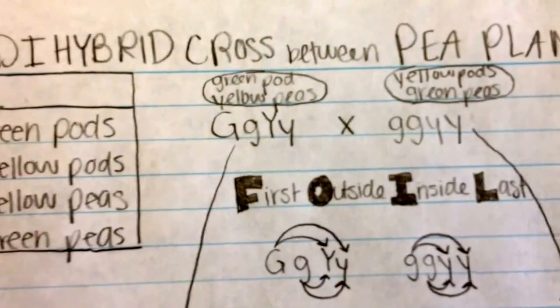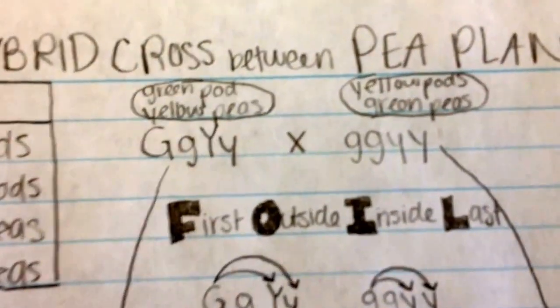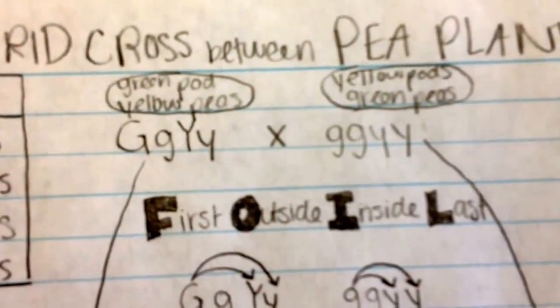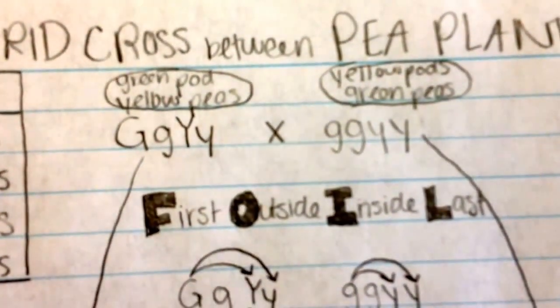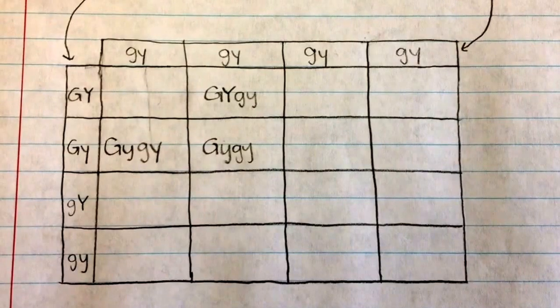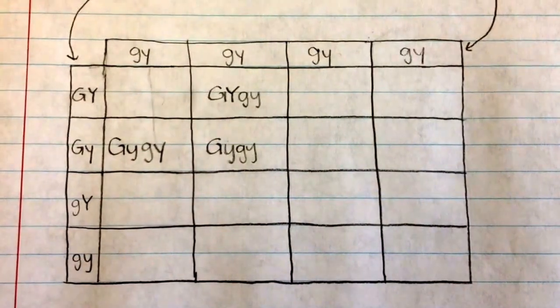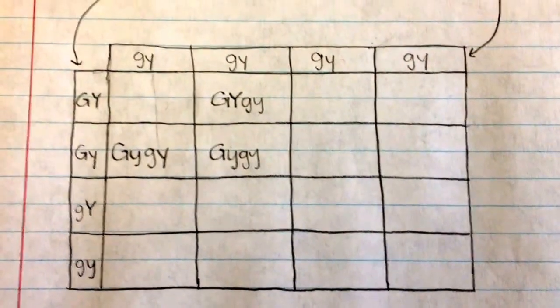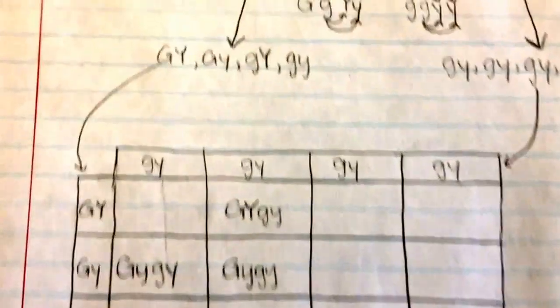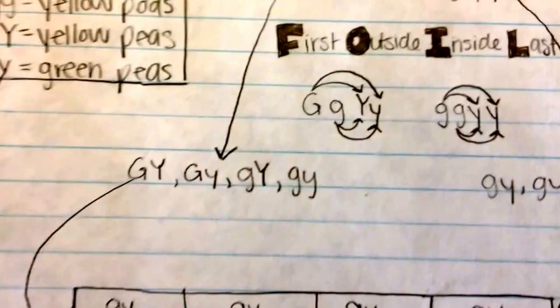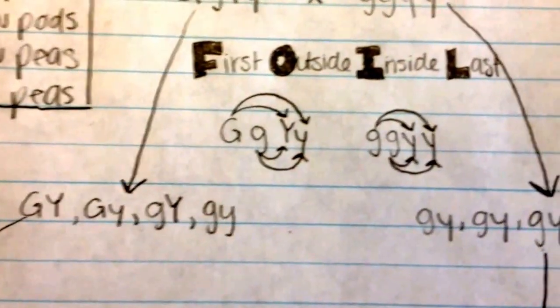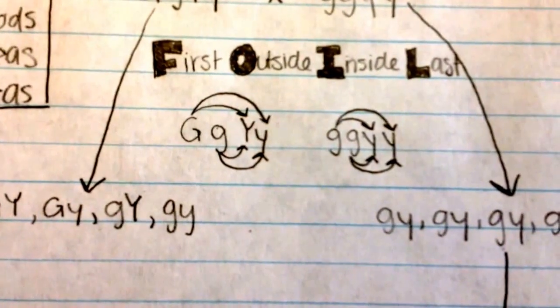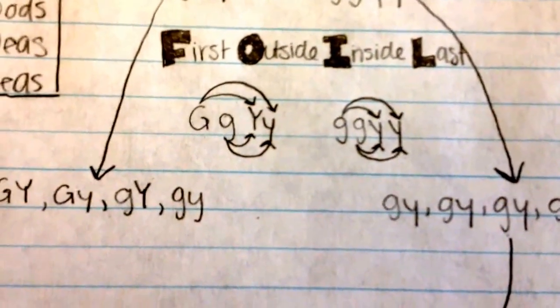First, we have our parents, one of which is heterozygous and the other is homozygous recessive. In order to put them into a Punnett square, we must segregate the alleles into form gametes, which we do by foiling, which stands for first, outside, inside, and last.